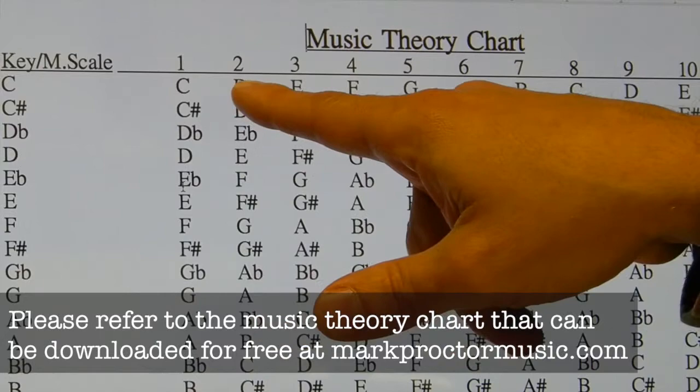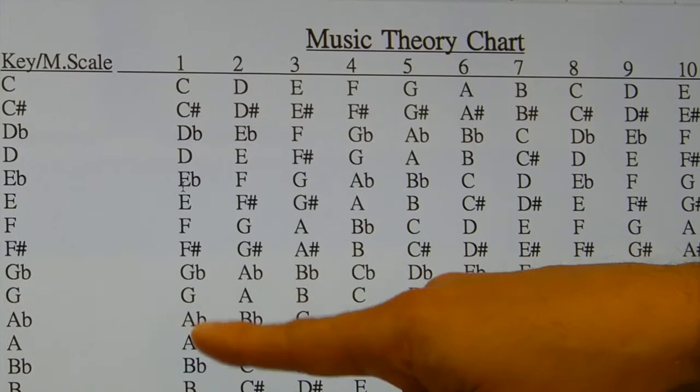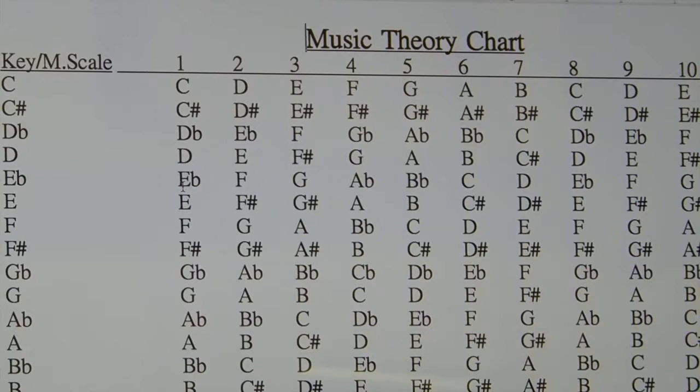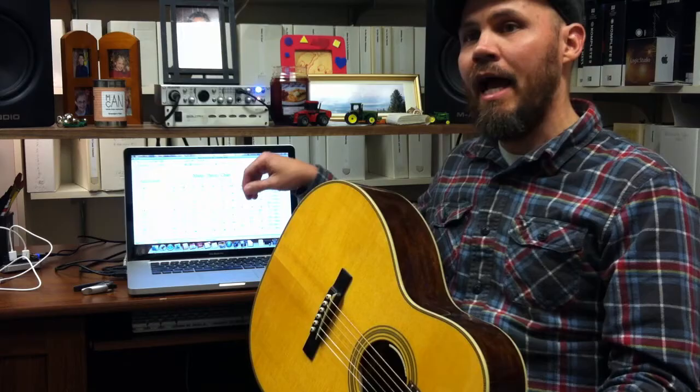From a scale, we have different note numbers or places in the scale. So if we went to a G scale here, G is the first note in a G scale, A is the second note in a G scale, B is the third, and so on.